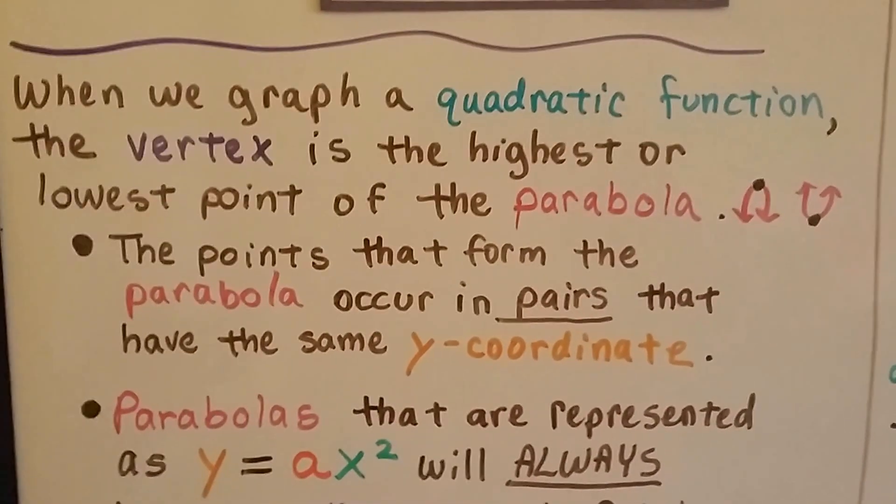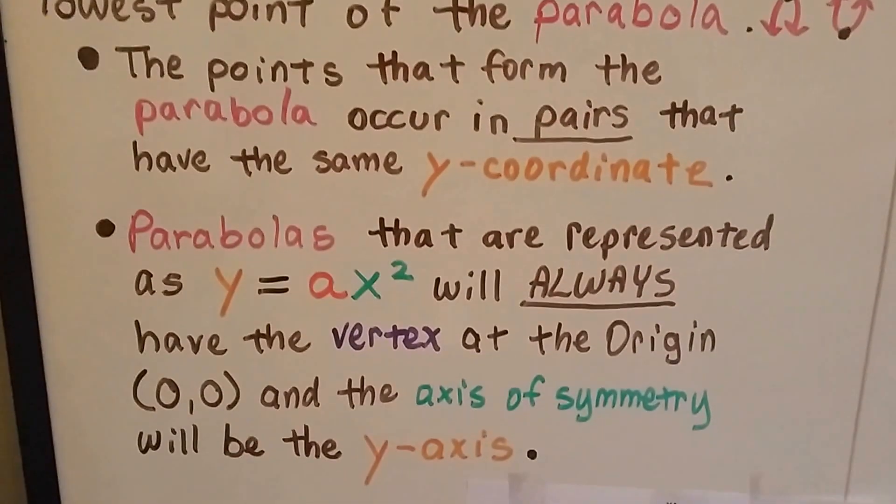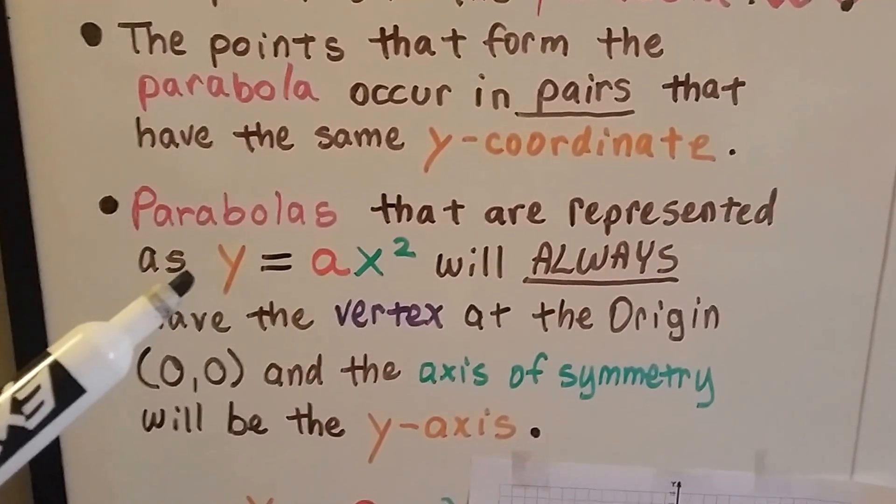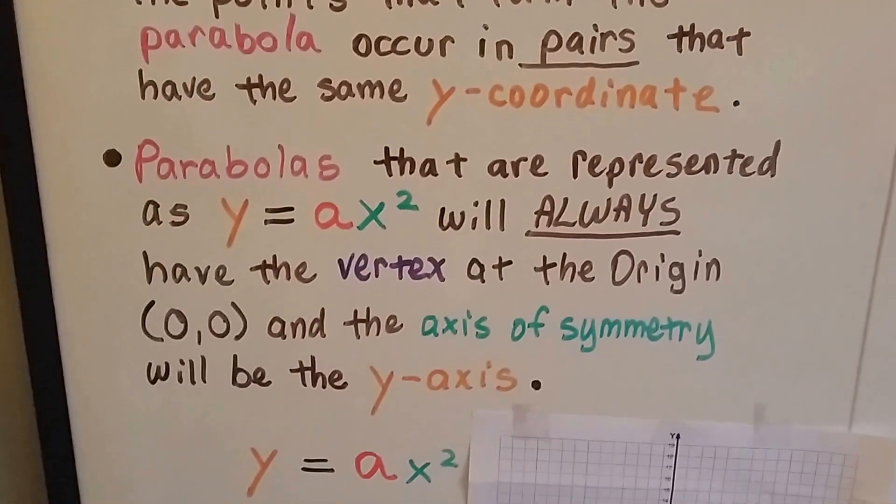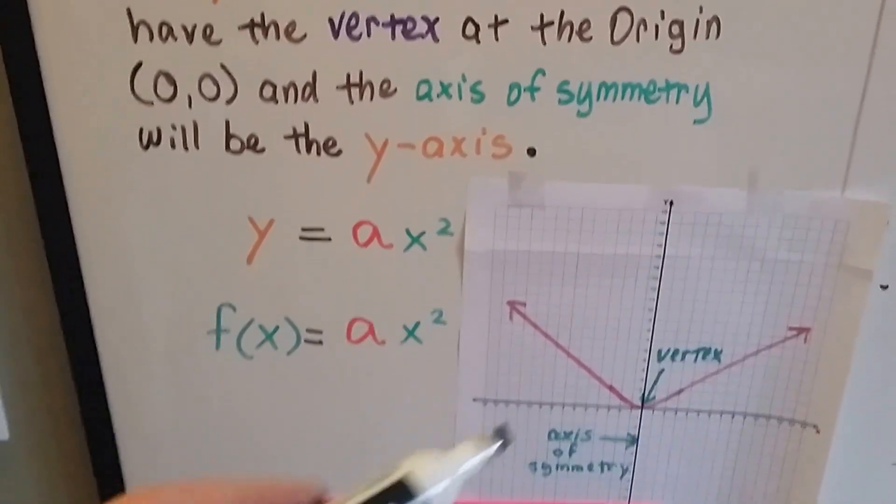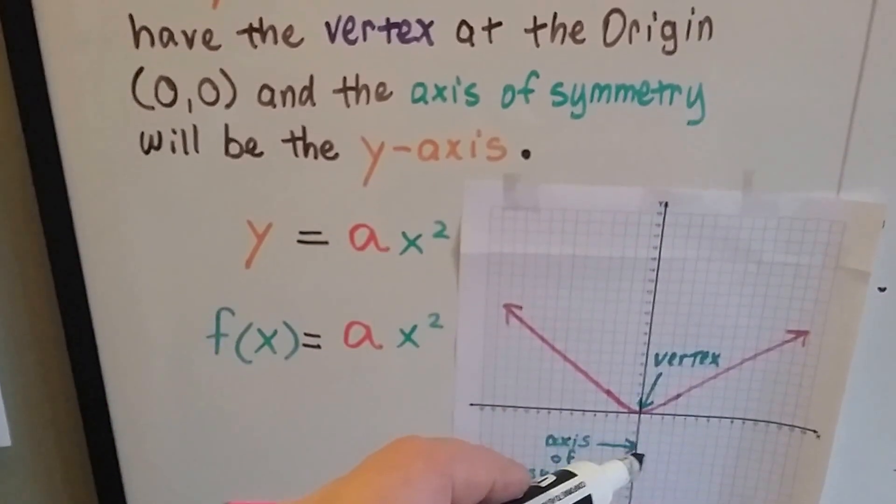And the points that form a parabola occur in pairs that have the same y coordinate. Parabolas that are represented as y equals ax squared will always have the vertex at the origin, and the axis of symmetry will be the y-axis. So, here's the axis of symmetry right here as we discussed in the last video.